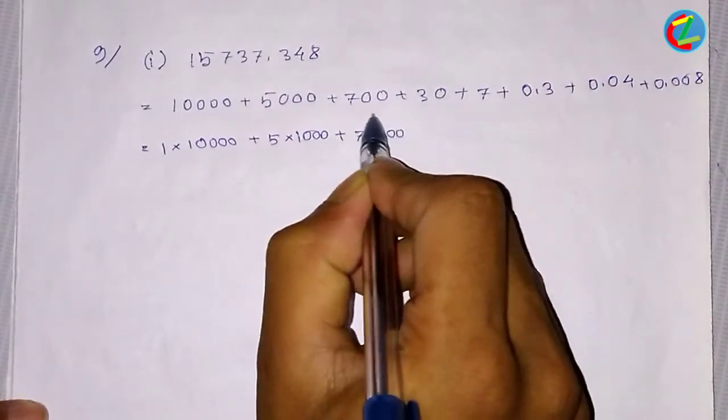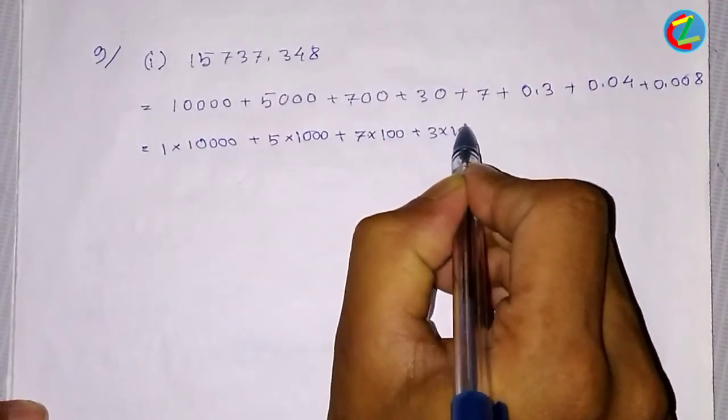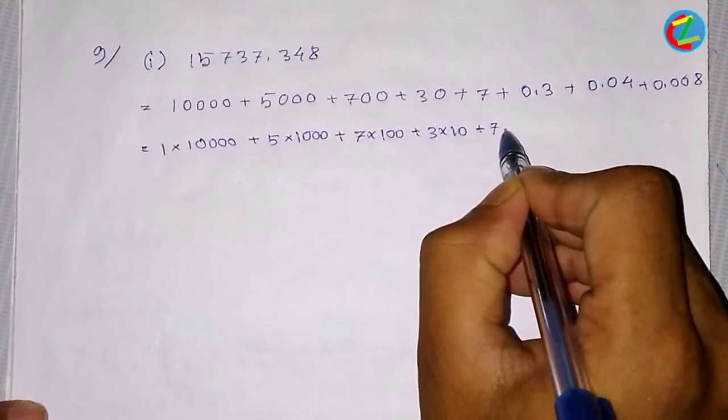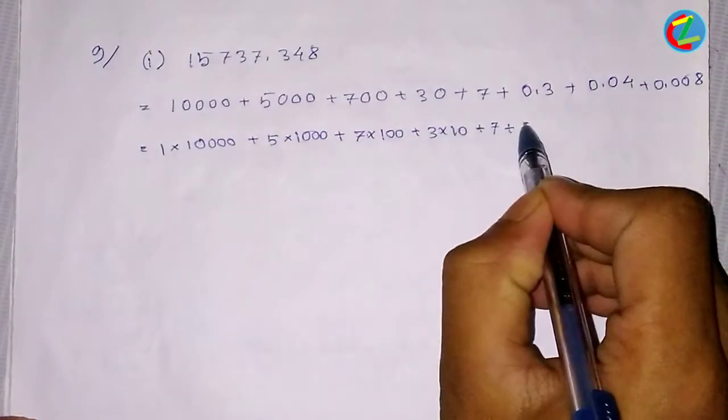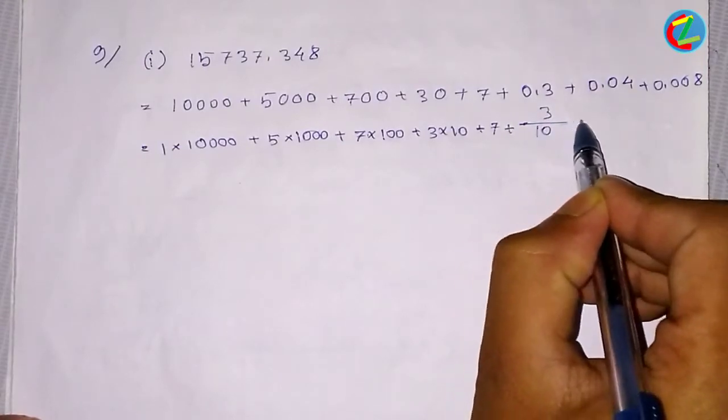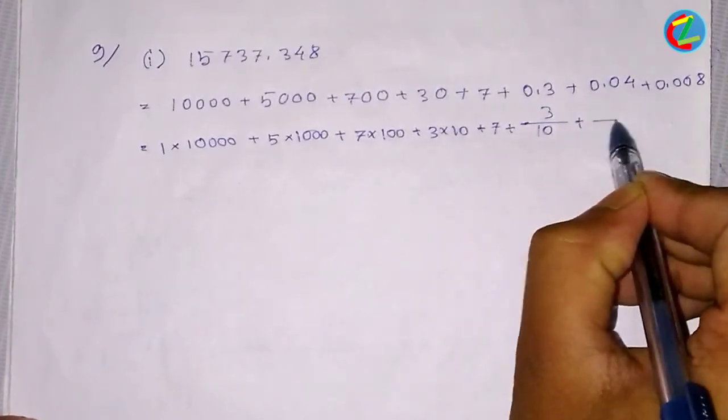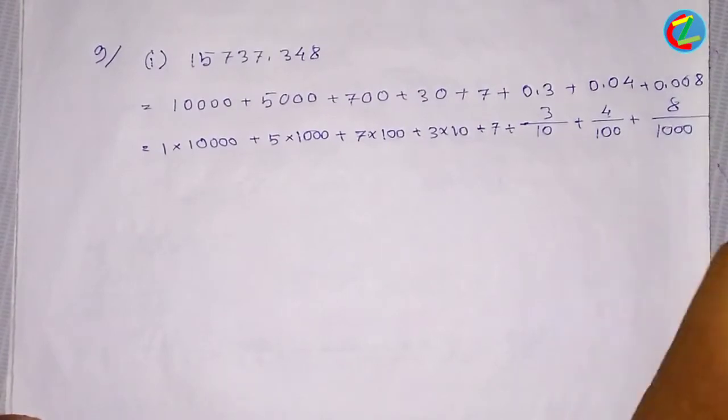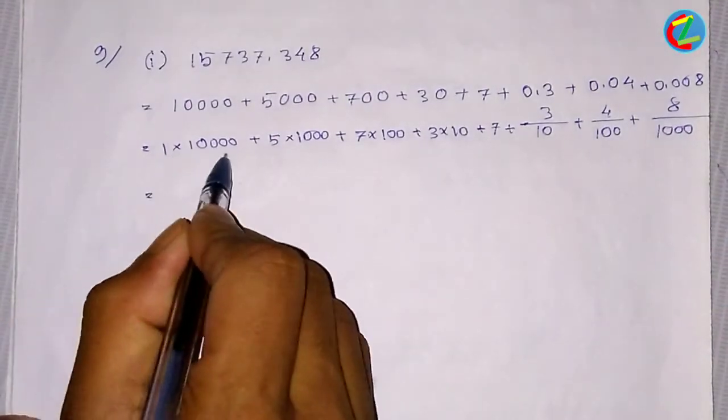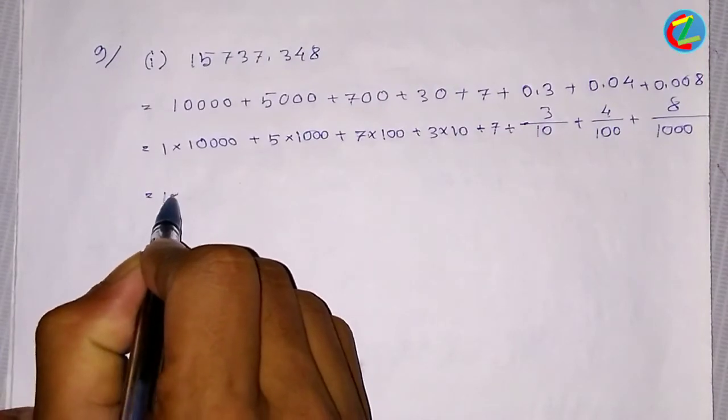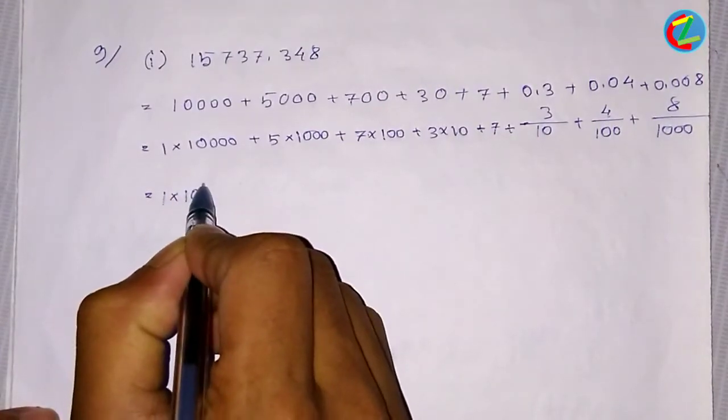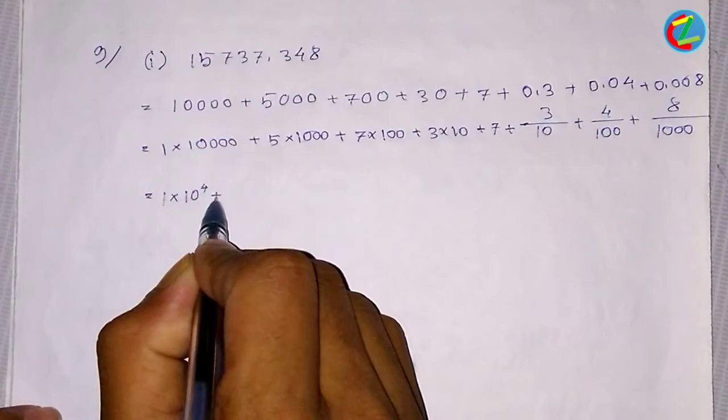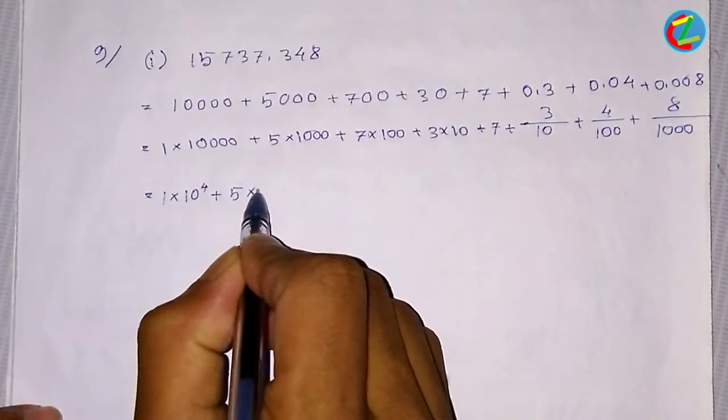We are going to be 3×10 plus 7×100. Then we are going to be 3×10 plus 7×100. That means we will be 3×10 plus 7×100. And then we will add 1×10,000. So we will add 1×10,000, 4 plus the next one, 5 into 10 to the power 3.